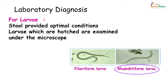If stool is preserved at the right temperature with adequate moisture in a cool environment, the ova will hatch and produce rhabditiform larvae. If kept for another 5 to 10 days, these rhabditiform larvae may also mature into infective filariform larvae. The larvae can be identified based on their mouth parts and the length of the alimentary canal.